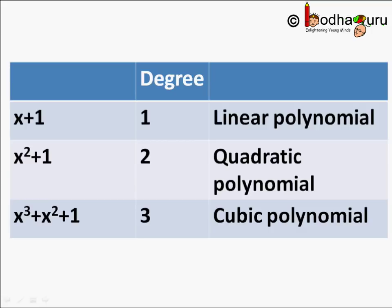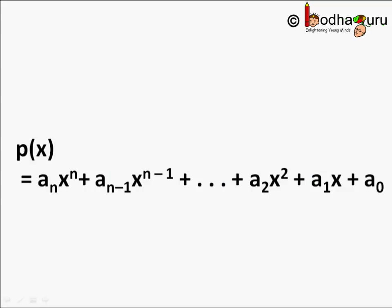To put it in a generic way, a polynomial p(x) of degree n is written as a_n x to the power n plus a_(n-1) x to the power n minus 1 plus and so on till a_1 x plus a_0, where a_0, a_1, a_2 till a_n are constant coefficients. The highest exponent of x is n. So the degree is n.